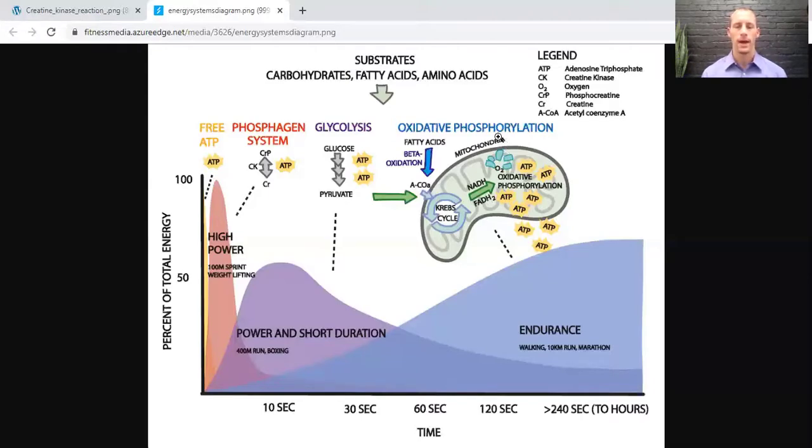Then we have these three systems: the phosphagen system, which is using creatine; glycolysis, which mainly uses glucose; and then oxidative phosphorylation, which uses fatty acids, ketone bodies, and that is involving the mitochondria. Starting from the backwards, oxidative phosphorylation is used more for endurance training. It's this system that is kind of a longer lasting. It makes more ATP per molecule. It's more efficient.